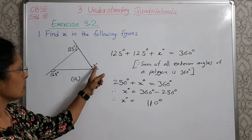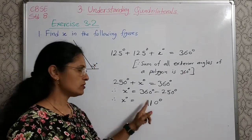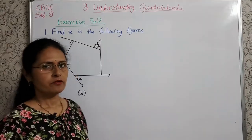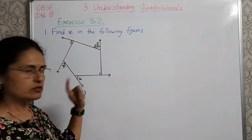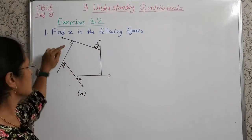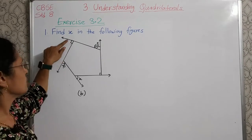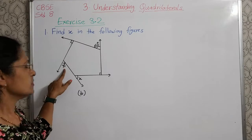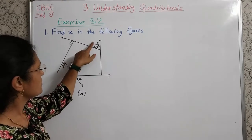So that unknown angle x, the measure of this angle x is 110 degrees. Next, figure B — this is a pentagon. The angles given are: this angle is 90 degrees (the right-angle marking is shown), then this angle is 70 degrees, and this angle is 60 degrees.